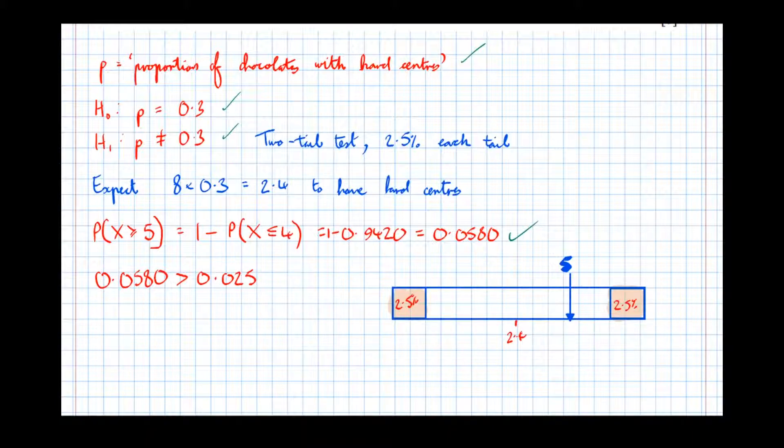Finishing off—oh by the way, that there is worth a mark. Finishing off, we're therefore going to accept H₀. H₀, insufficient evidence.